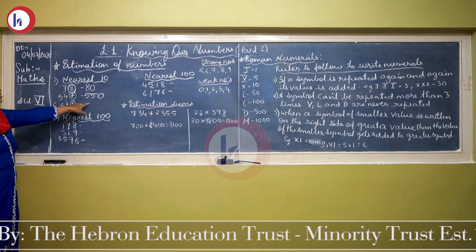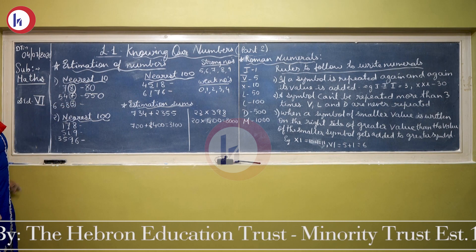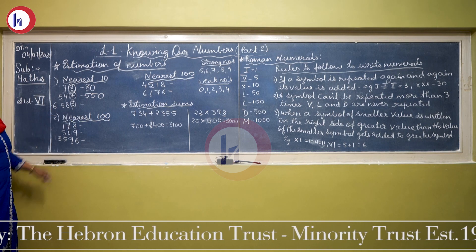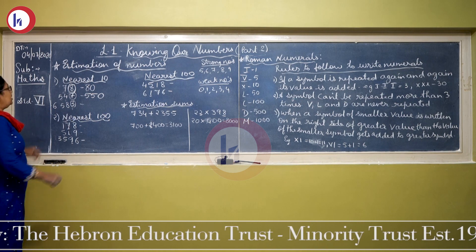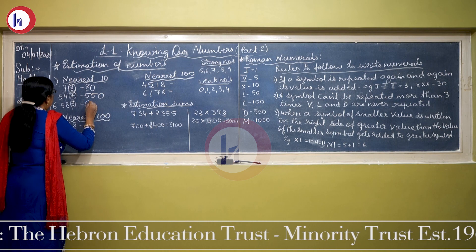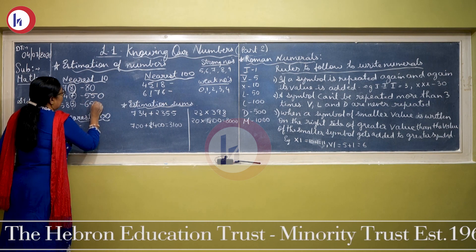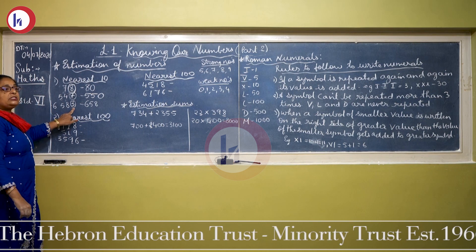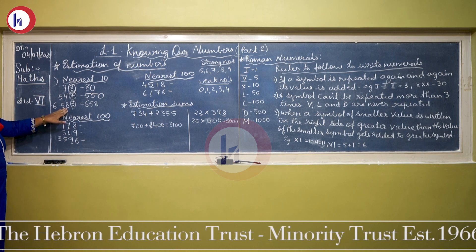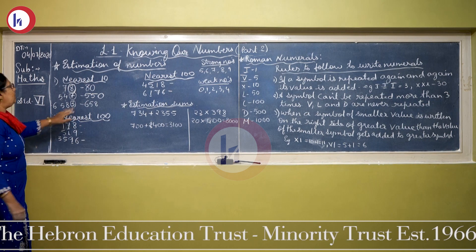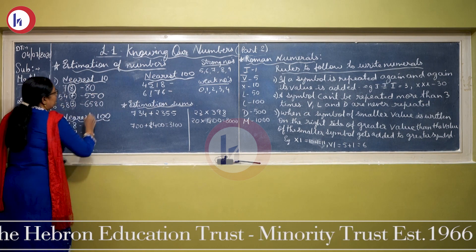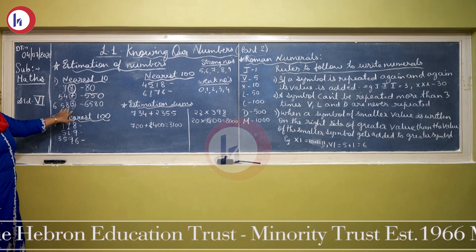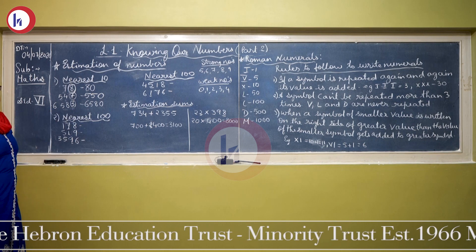Next number is 6583. Now 3 — again it is a weak number. So here the number will not be added to the tens place. So 3 will be replaced by 0. Therefore, 6583 is nearest to 6580.